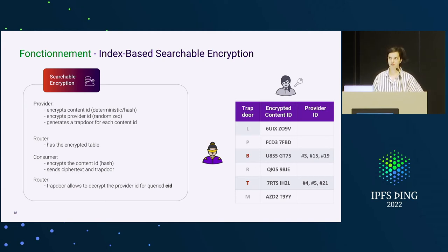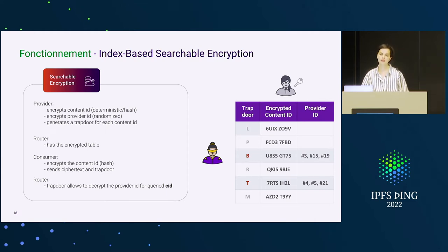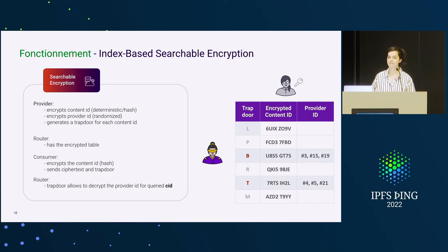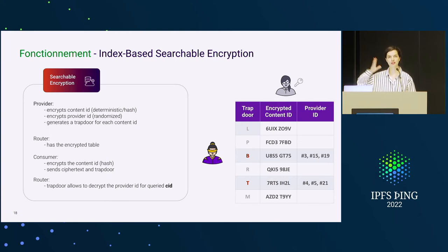There are some problems here. How do we coordinate between consumers and providers so they share the same trapdoor? The encrypted content ID can be done with hashes since it must be deterministic and we never decrypt it. But how do we encrypt the provider ID and obtain the trapdoor? You could use the CID as a key, but then the router could do that too. The router does get the trapdoor, so what's the difference from the router seeing the encrypted provider ID? You'd need a key exchange somewhere in the middle.